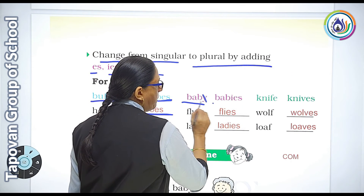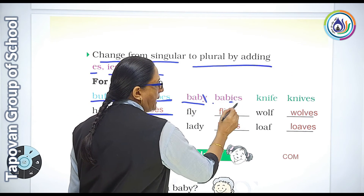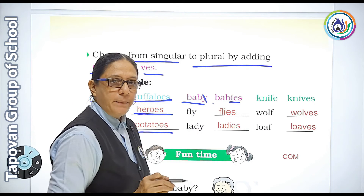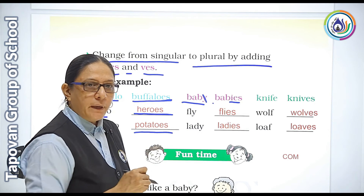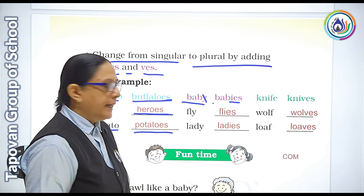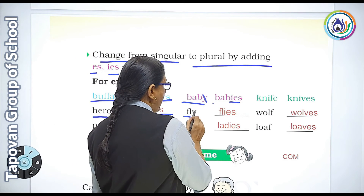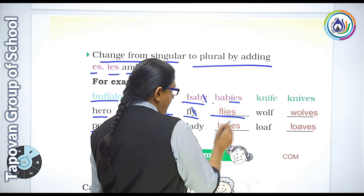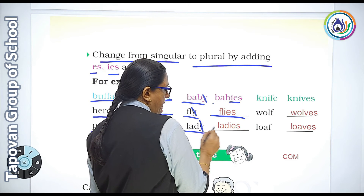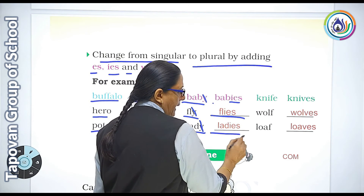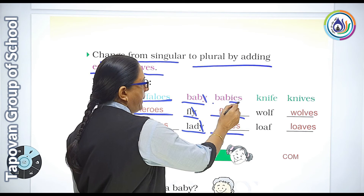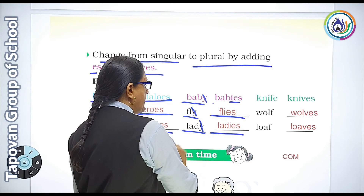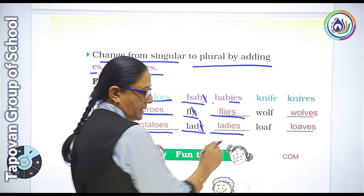Baby — y cut karke ies likhenge — becomes babies. Fly becomes flies. Lady becomes ladies. Ek baby, anek babies; fly, flies; lady, ladies.